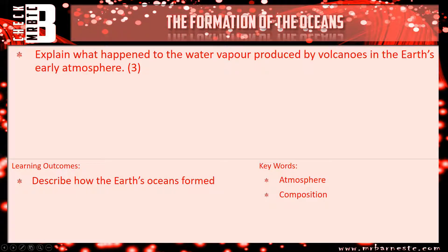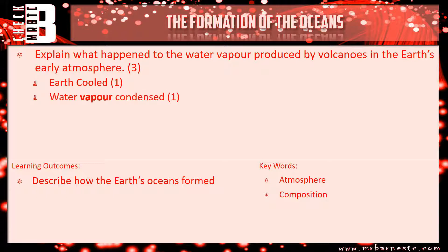Let's go through and see how you've done. Explain what happened to the water vapor produced by volcanoes in the Earth's early atmosphere. Simply: what happened to the Earth? It cooled — that's your first marking point. What happened to the water vapor? It condensed — condensed means turned back into a liquid. And then what did it form? The oceans. That's all you need for three marks.